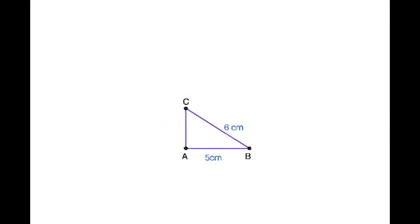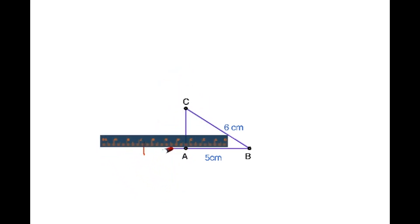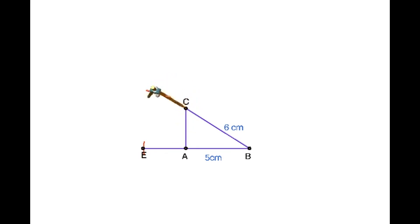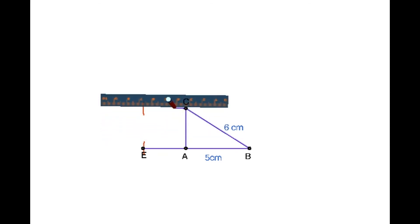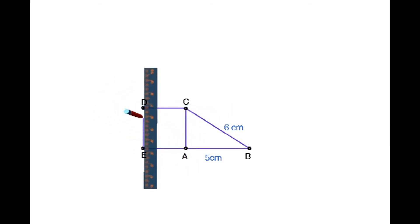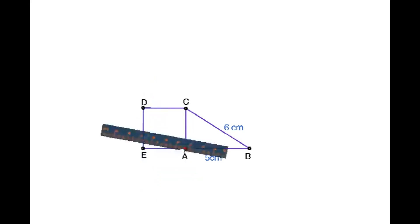Using a compass underneath AC, extend the lower left side. Now construct the square by changing the compass setting to the root 11 cm length. The square with area 11 is now complete, with side root 11 cm.